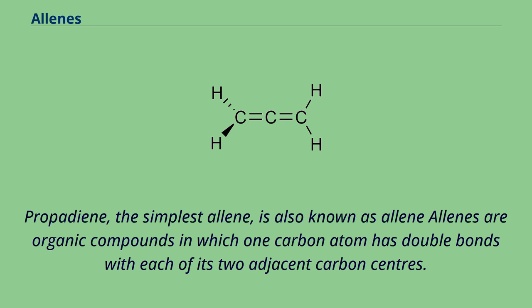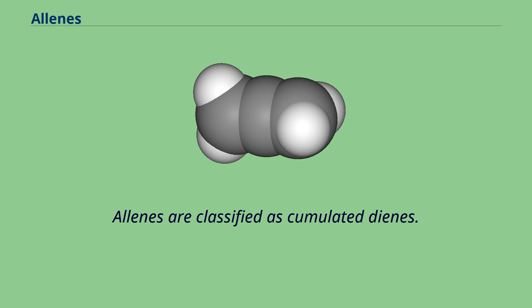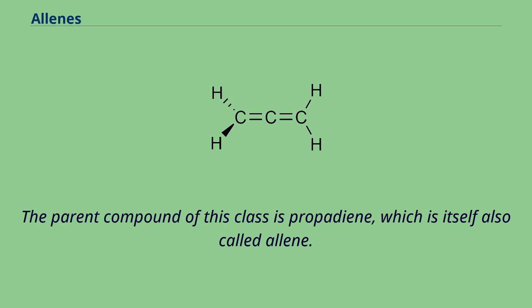Propadiene, the simplest allene, is also known as allene. Allenes are organic compounds in which one carbon atom has double bonds with each of its two adjacent carbon centers. Allenes are classified as cumulated dienes. The parent compound of this class is propadiene, which is itself also called allene.